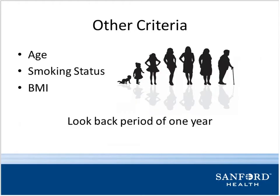Other criteria we pull in: what is the patient's age? What is their smoking status? We're looking at tobacco and non-tobacco — smoking cigarettes, vaping — all those different things pull into smoking status. And then the patient's BMI. Our look-back period is one year — we're looking back and pulling all these criteria together for the past year for this patient.